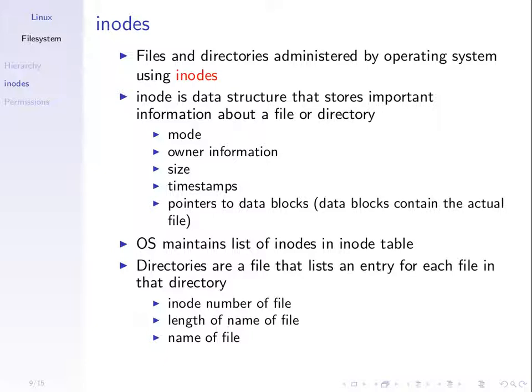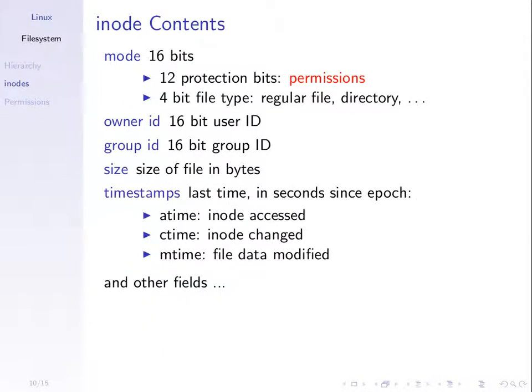We're introducing inodes because we want to look at the mode — the permissions or access rights in our file system. The mode is 16 bits. The first 12 bits are called the protection bits, which specify the permissions and what people can do with that file. The other four bits indicate the file type — for example, whether this is a regular file, a directory, or some other special file.